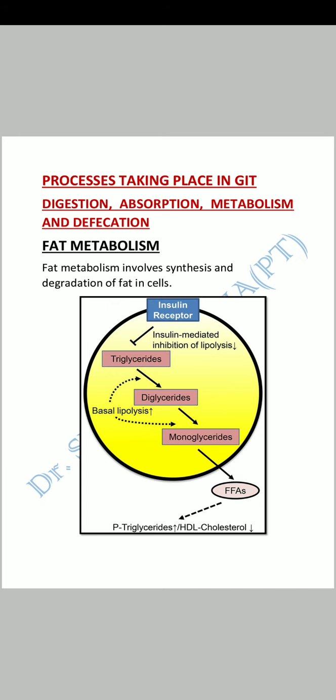Fat metabolism involves synthesis and degradation of fat cells. Whatever we eat that has fatty acids or fat content goes to our body for synthesis and degradation. When we break down fat metabolism, fat starts as triglycerides, then they become diglycerides, then they get converted into monoglycerides, and then into fatty acids, which are stored in our body.